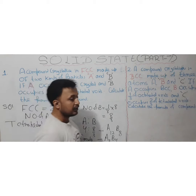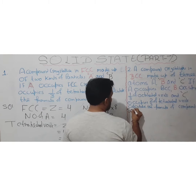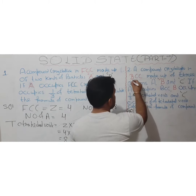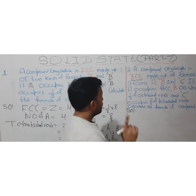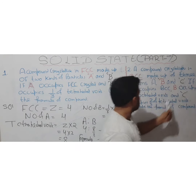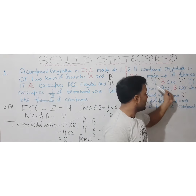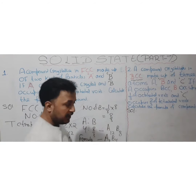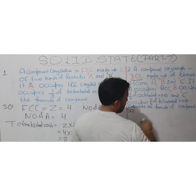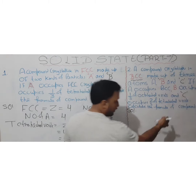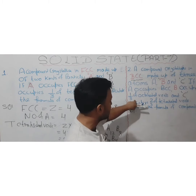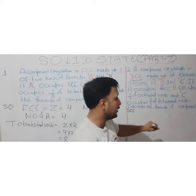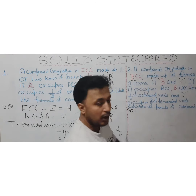Now let's see the second type of question. A compound crystallizes in BCC and is made up of 3 atoms: A, B, and C. A occupies the BCC lattice points, B occupies one-third of the octahedral voids, and C occupies two-thirds of the tetrahedral voids. Calculate the formula of the compound.